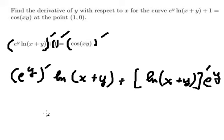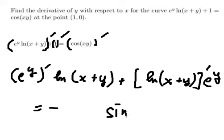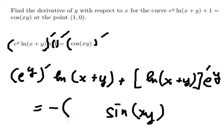For this one, if we do the first derivative of cosine of xy, we will get negative sine of xy. And we continue to do the first derivative of xy in here.